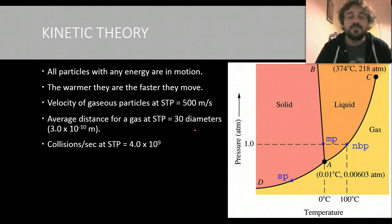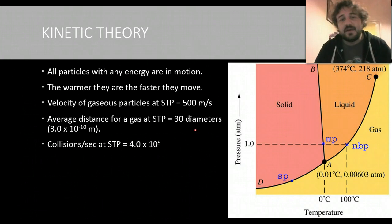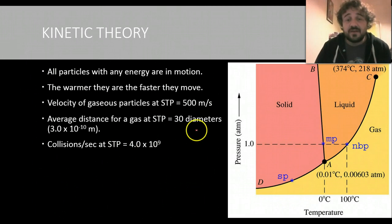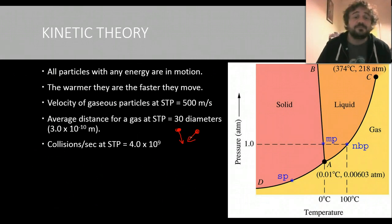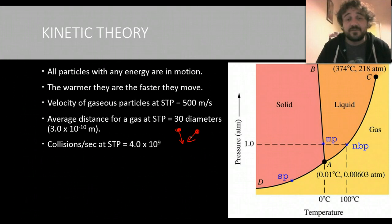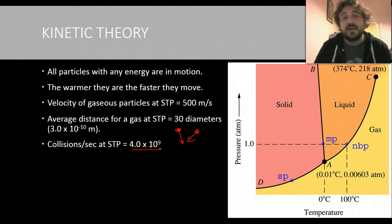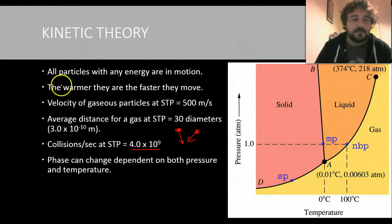So collisions per second. These particles are bumping into each other all the time. It's 4.0 times 10 to the power of 9 at standard temperature and pressure. In other words, you've got one particle floating around here, and one particle, so they're all moving at 500 meters per second. One's going this way, this one's going this way. So in a liter of gas, there's about that many collisions every second. So that's all gases. That's important.